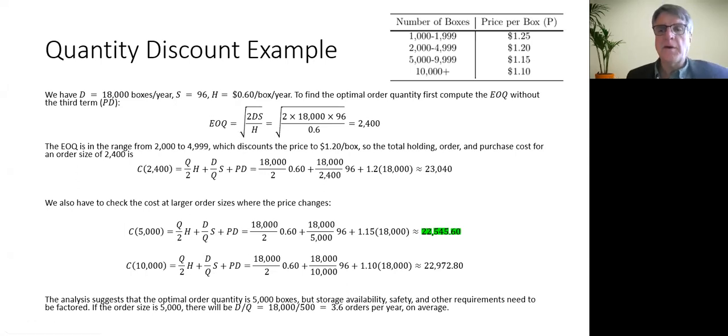Here's how this goes. We first solve the EOQ problem for the two-term cost function, where it features the annual holding cost and the annual order cost, and we ignore the purchase cost. So to do that, I know that my demand is 18,000 boxes a year. The order charge is $96 and the holding charge is 60 cents a box a year. And then I just plug that in and get my EOQ of 2,400 boxes.